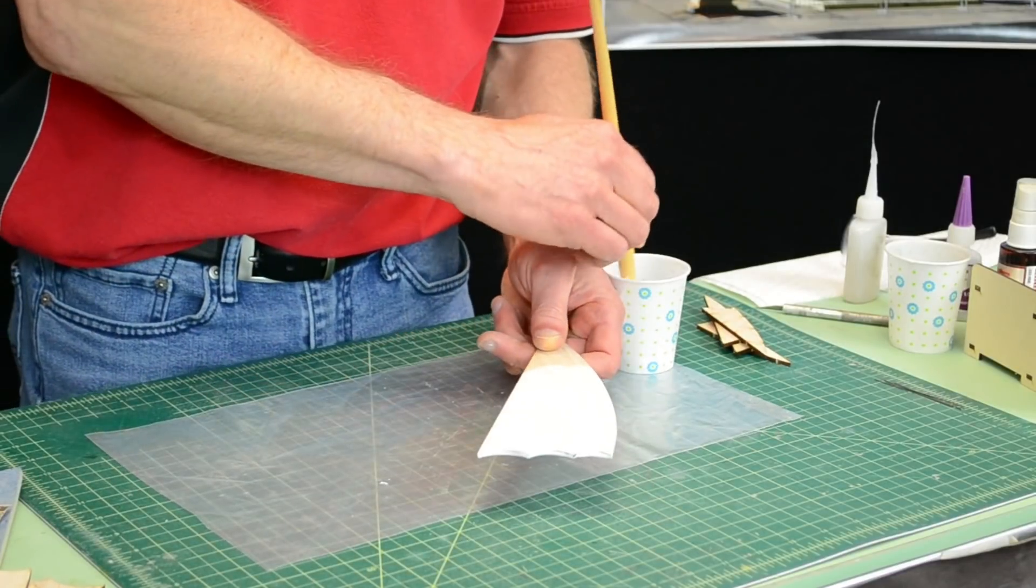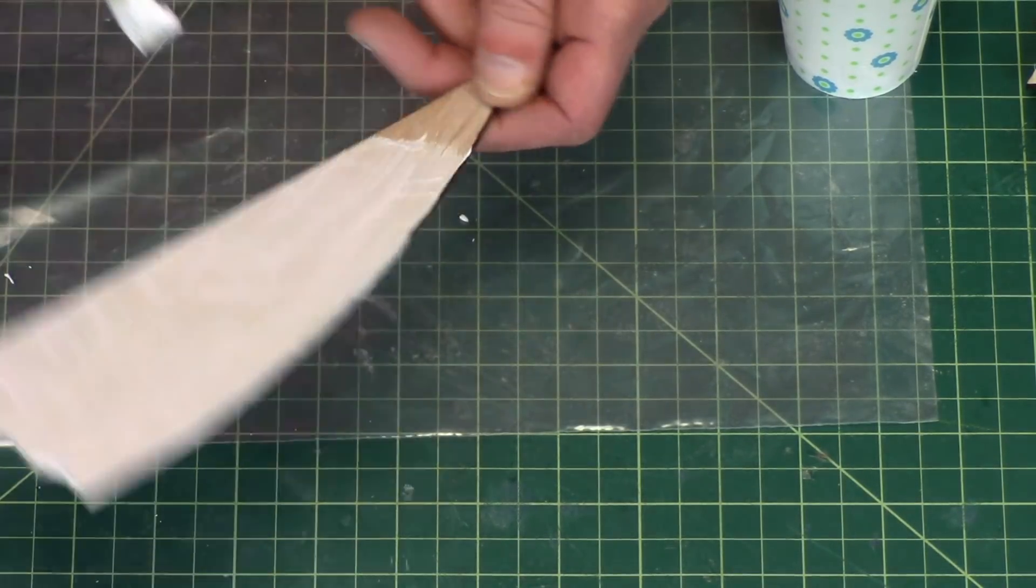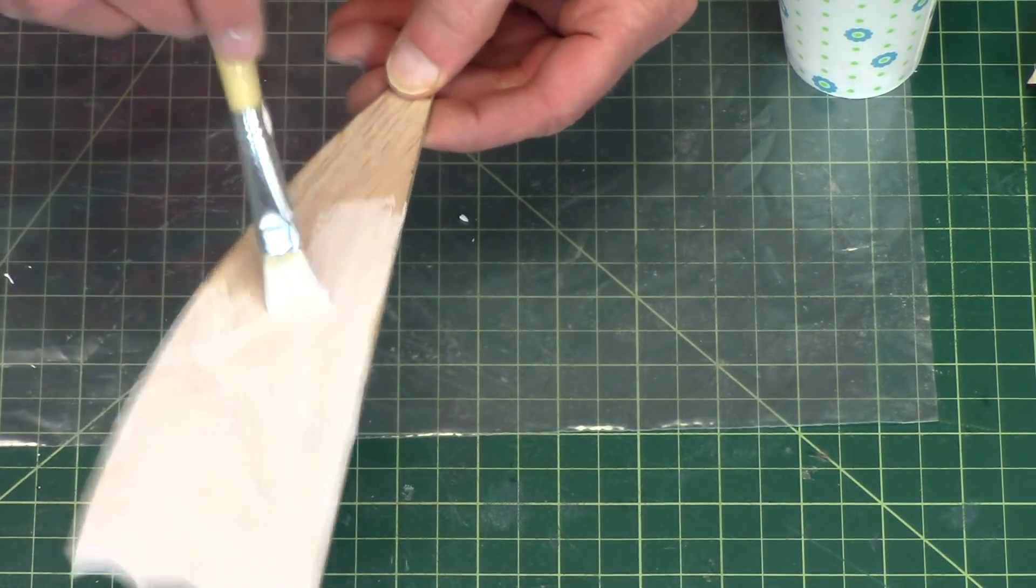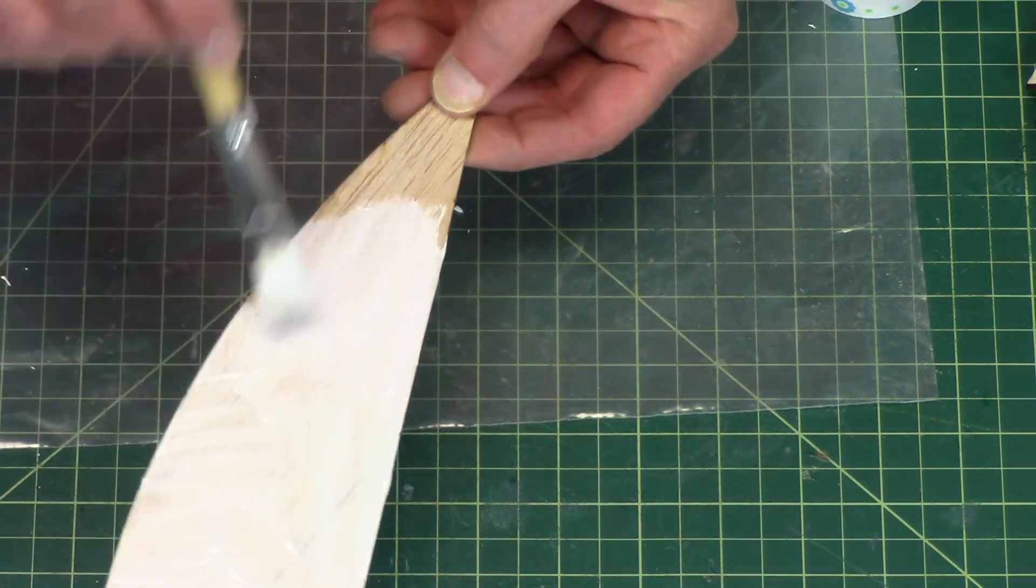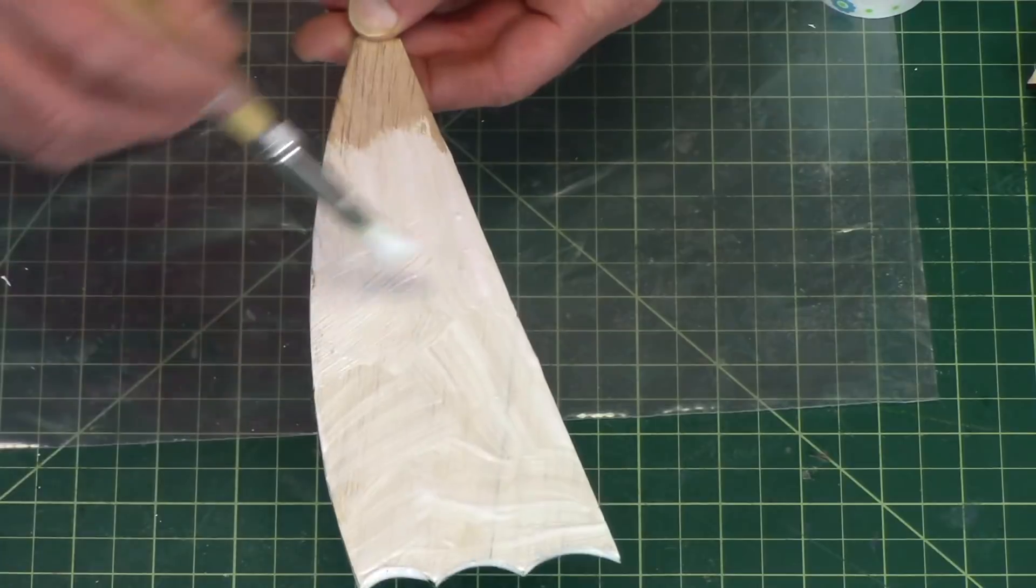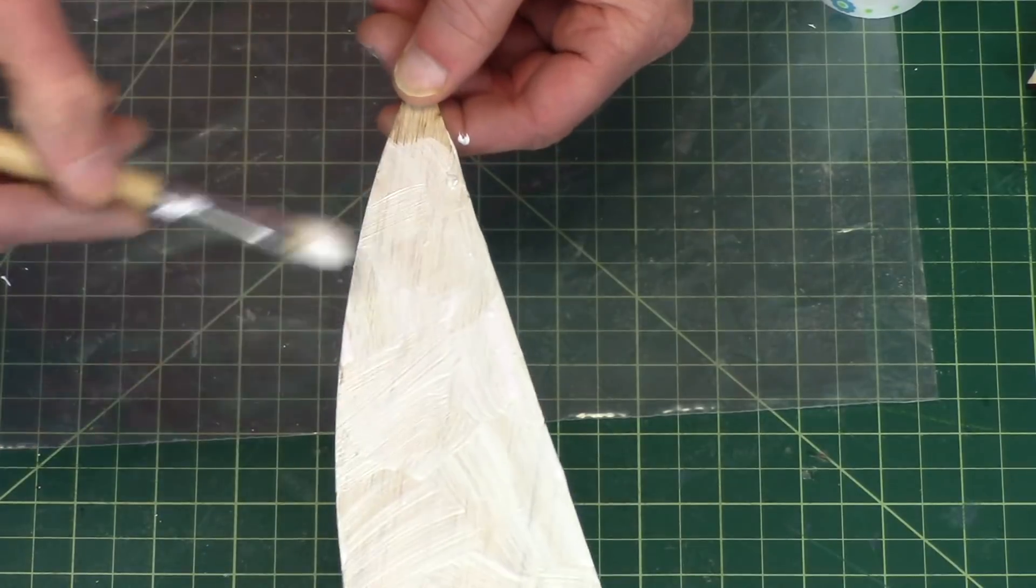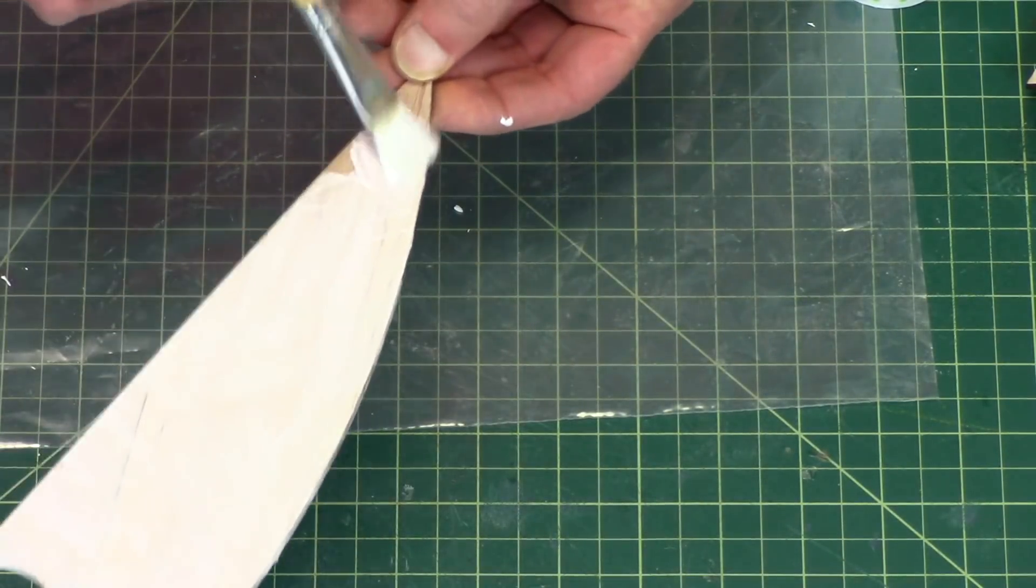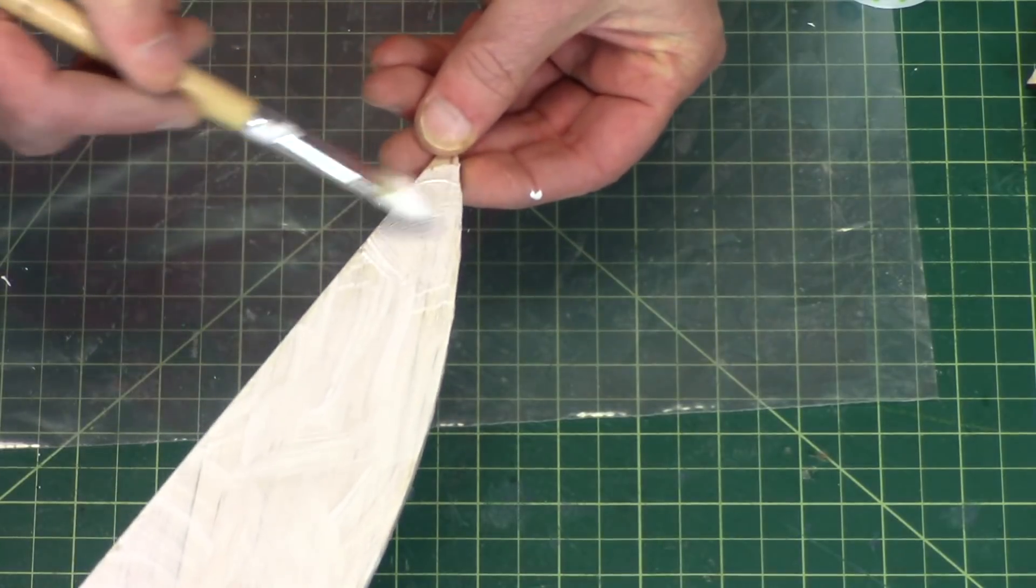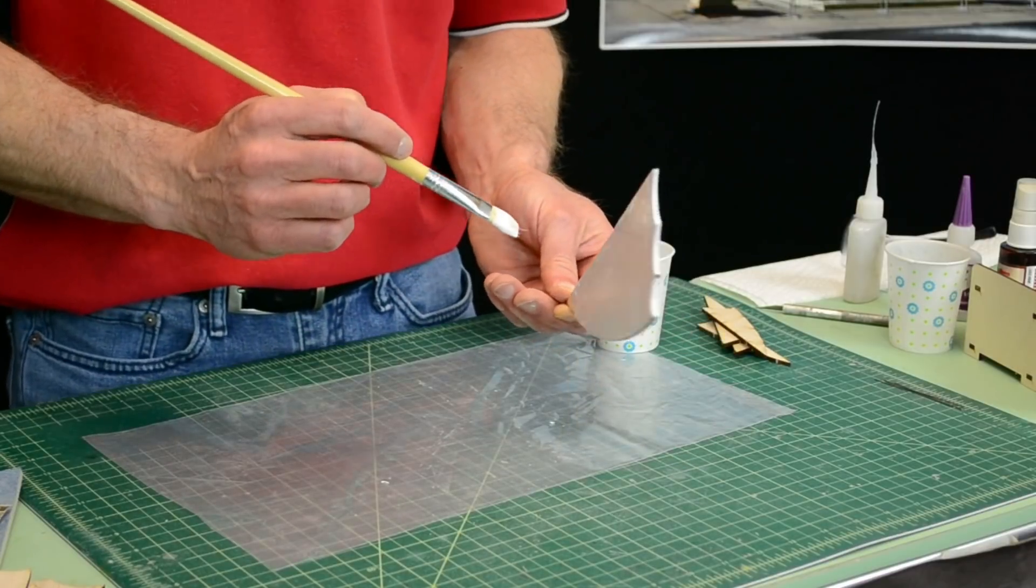Now this may take up to an hour to dry, it depends on your humidity level in your area. Here in Colorado it dries pretty fast, it'll dry in 20 minutes because our humidity is pretty low. You can stick it outside in the sunlight, you can have a fan blowing air across it just to dry it a little quicker. That works just fine.